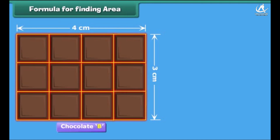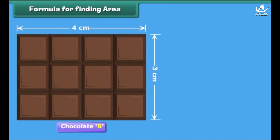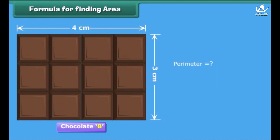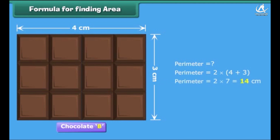We found the area of chocolate B by counting the total number of squares on it. Alternatively, we can also calculate the area just by multiplying the number of squares along the length of the chocolate with the number of squares along its width. Thus, area is equal to the length multiplied by the width. The perimeter of chocolate B is equal to twice the sum of the squares along its length and width, so the perimeter of chocolate B is equal to 14 centimeters. Alternatively, perimeter is equal to twice the sum of the length and width.